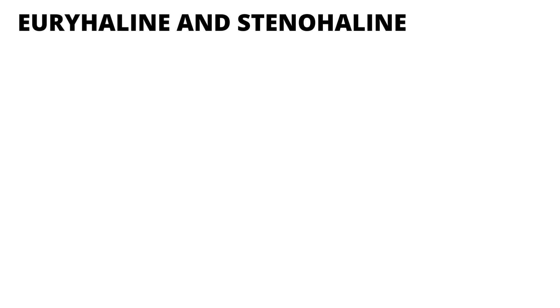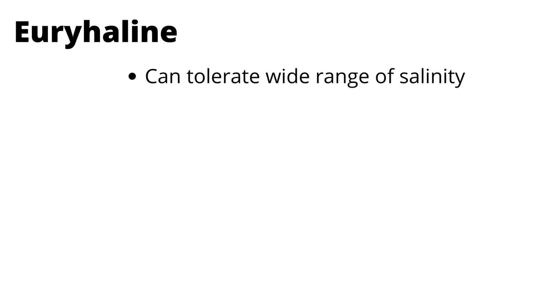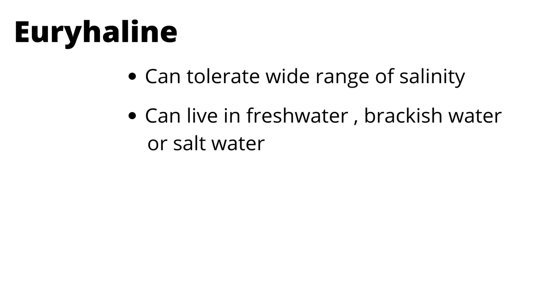Euryhaline and stenohaline organisms come under aquatic organisms. Euryhaline organisms are those which can tolerate a wide range of salinity, which means they can live in water with any range of salinity. These organisms can live in freshwater, brackish water, or salt water, as they have the capacity to tolerate a wide range of salinity.